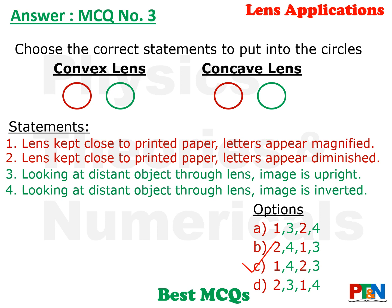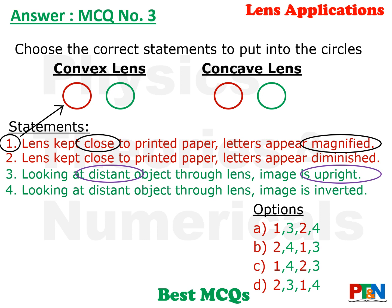The right option is option C, that is one-four, two-three. Let's take a close look. Option A says when the lens is close to printed matter the image is magnified, so it must be a magnifying glass — option one goes for convex lens. That means your options would be either A or D. Now looking at a distant object — the image is upright, not inverted. Inverted image is formed by a convex lens, so upright means it is a concave lens. Option three goes to concave lens, confirming option C: one-four, two-three.